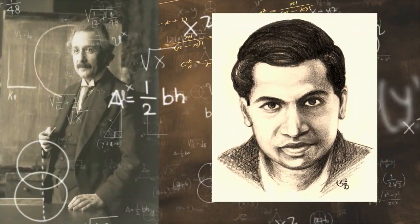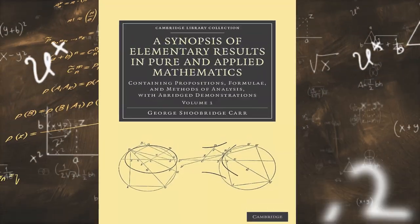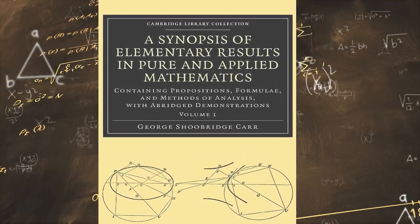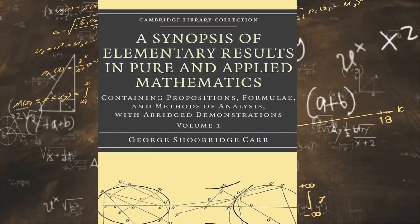Ramanujan became entranced by an elementary textbook entitled 'A Synopsis of Elementary Results in Pure and Applied Mathematics' by G. S. Carr.